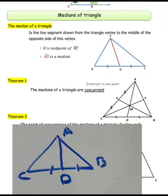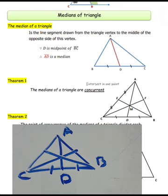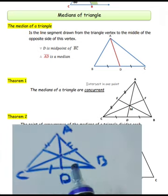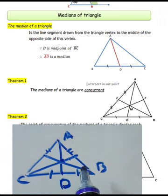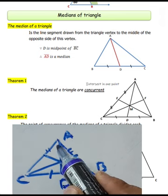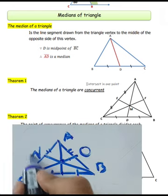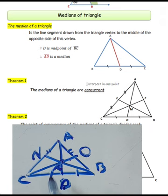The medians of a triangle intersect at one point. In triangle ABC, medians CO, BN, and ED all intersect at point M. So ED, CO, and BN are all medians and they are intersecting at the single point M.